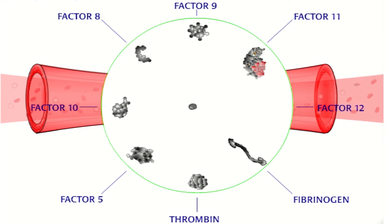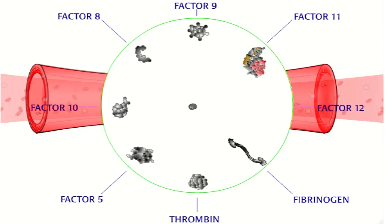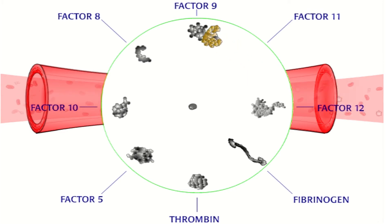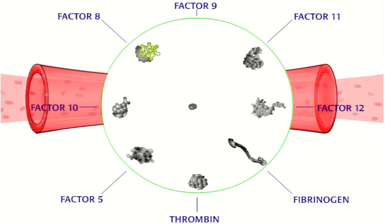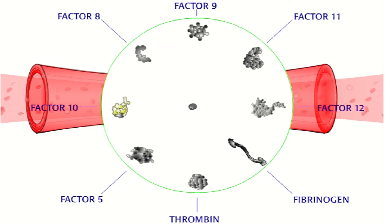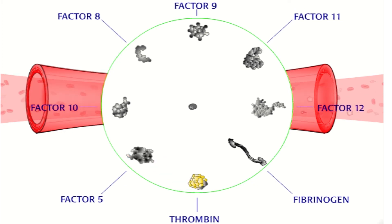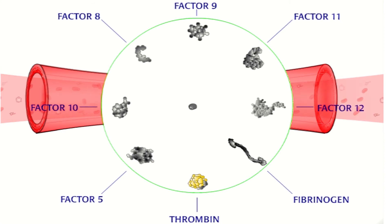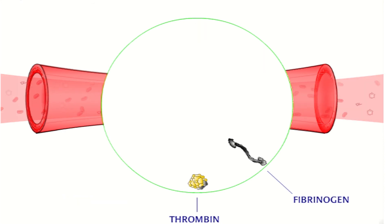Factor 12 then activates another clotting protein, factor 11, by closely fitting into it like a lock and key mechanism. Once factor 11 is activated, it activates the next molecule, factor 9, with the same lock and key mechanism. This initiates a cascade of reactions that ends when the last molecule, thrombin, is activated.